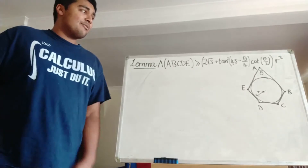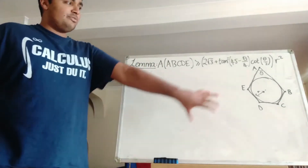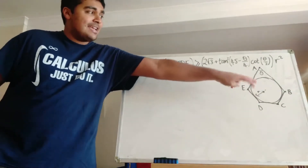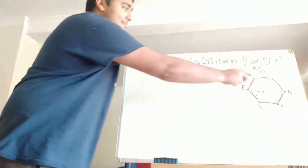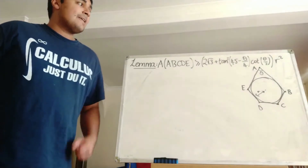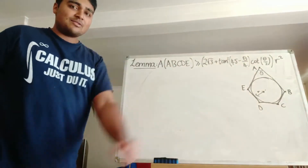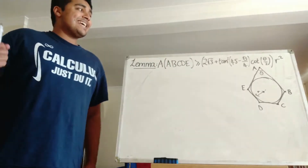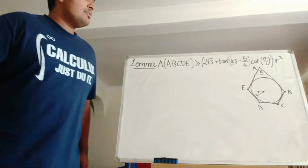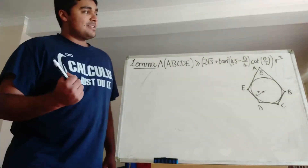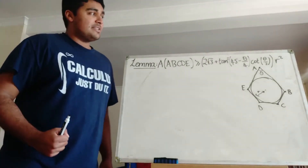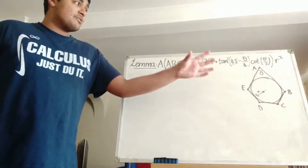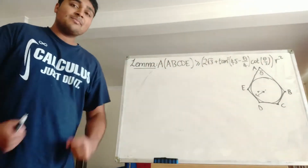The first thing I'm going to do is state and prove a lemma. Suppose we have a pentagon A, B, C, D, E, and inside it we have a circle which just touches each of the five edges, and the circle has radius R. Then I claim that the area of the pentagon ABCDE is at least 2√3 plus tan²(45 − θ/4) times cot(θ/2), all times R squared. I'm working in degrees, and this formula holds. Let's prove it.